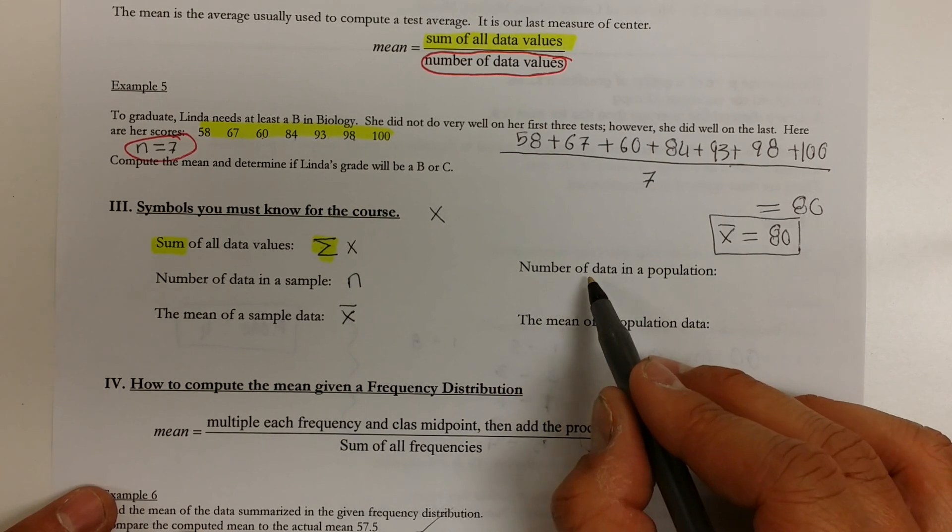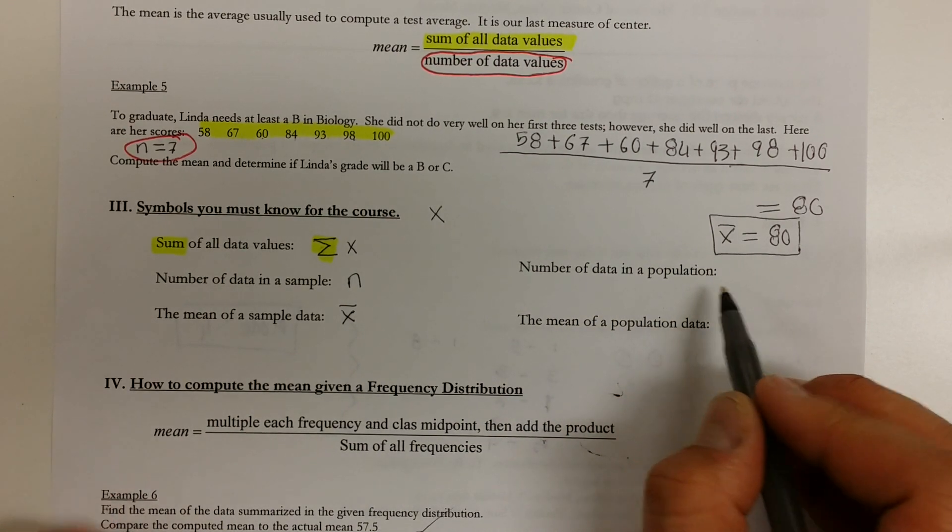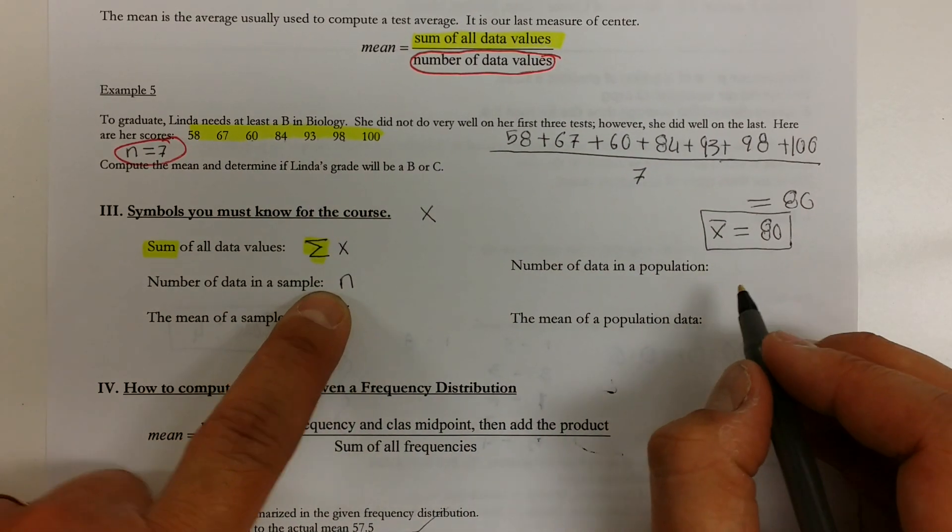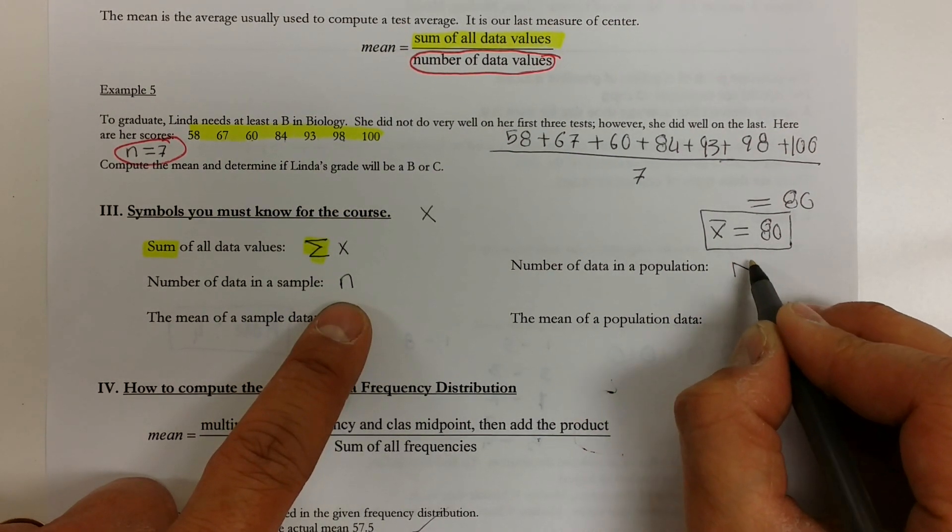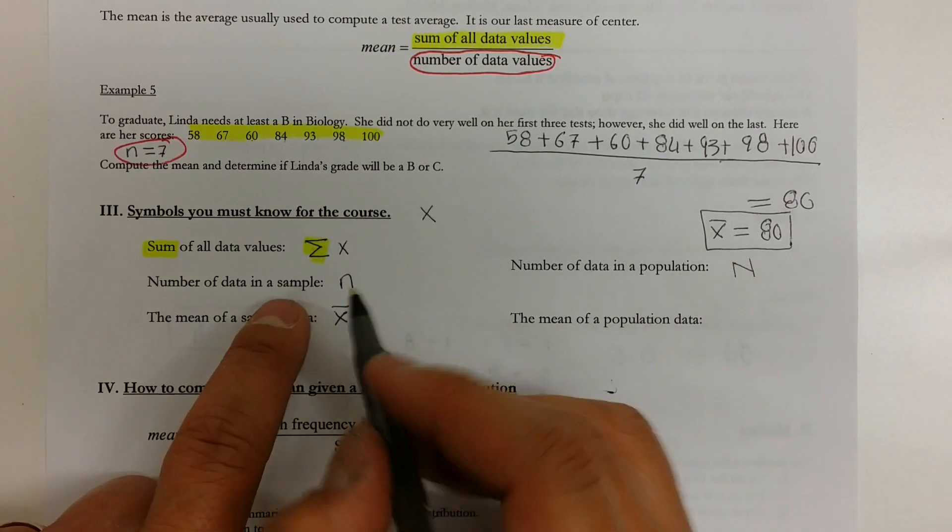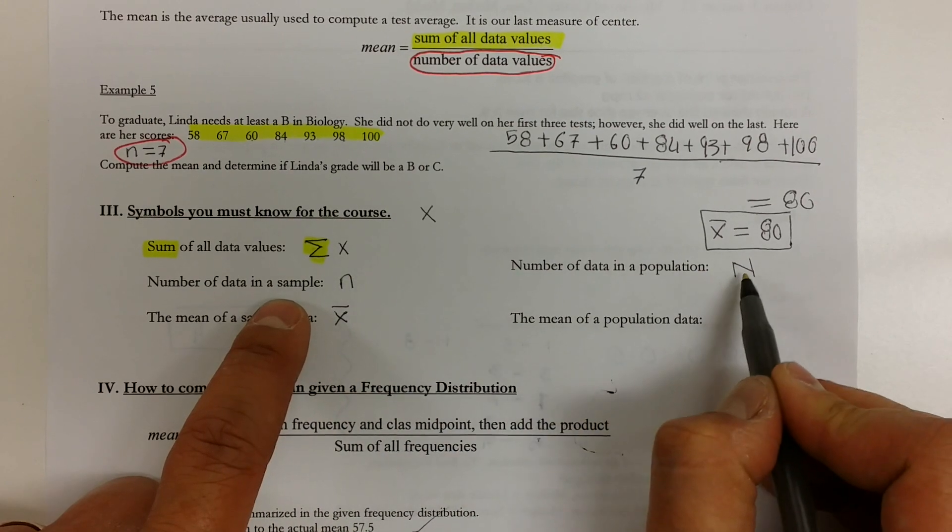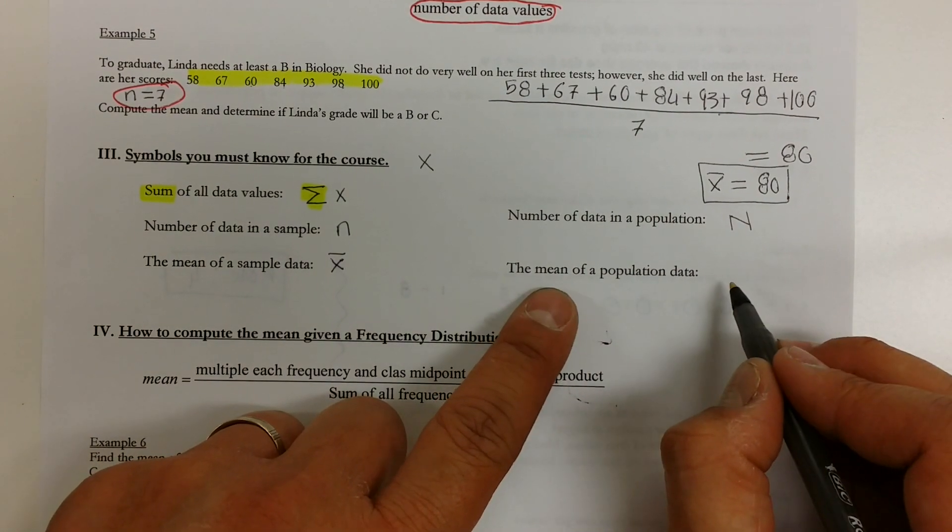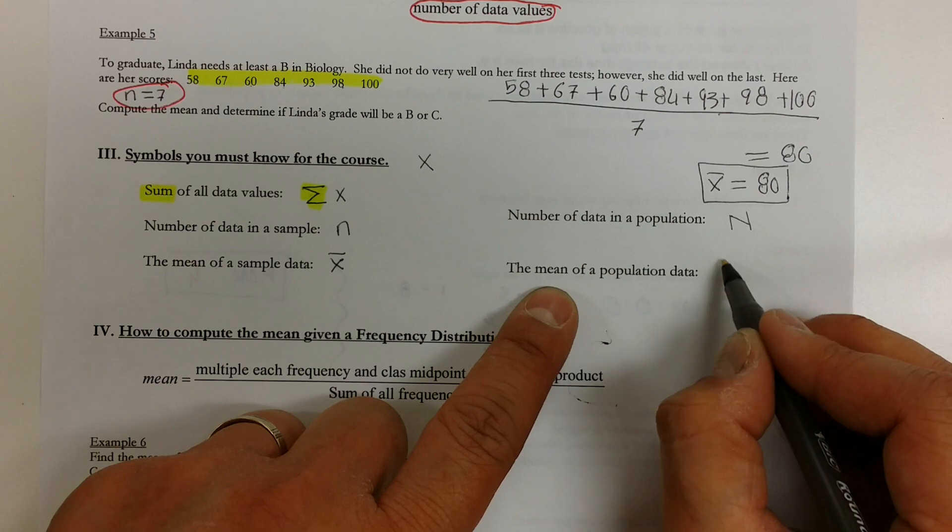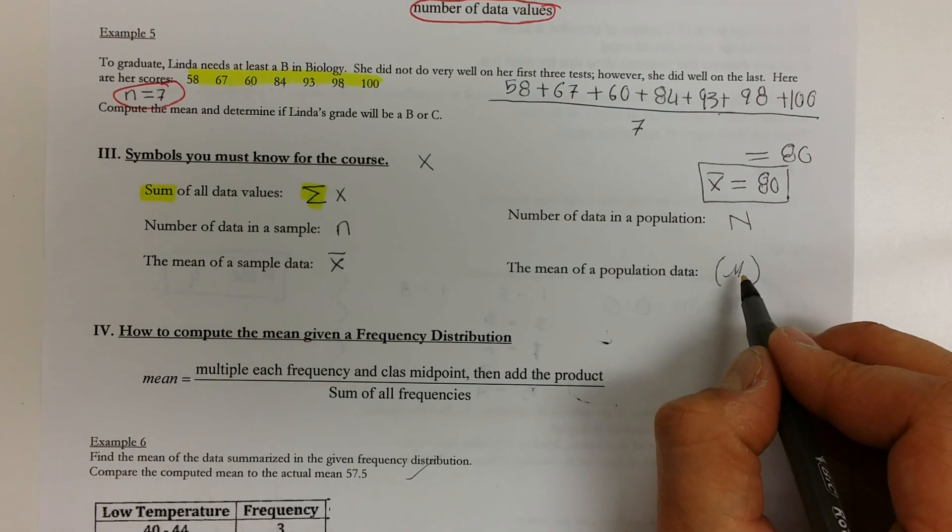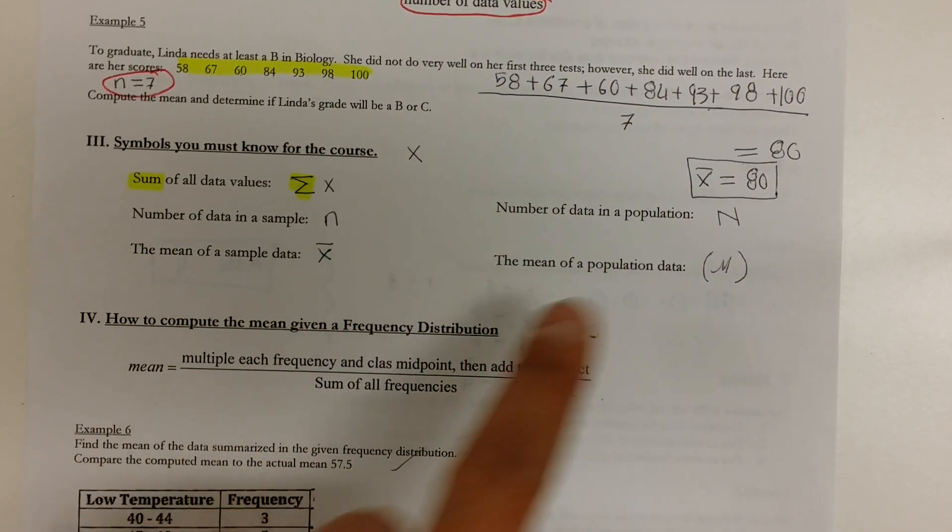Now, the number of data in a population, unlike the number of data in a sample, if you recall from what we did in class today, the letter to represent the number of data in the population is capitalized N. Think of this as the number of people in the class. Think of this as maybe picking 10 people out of 35 people in the class. Now, the average of your population is represented by the symbol, we call it mu. It looks like the letter M, but it's read as mu. Make sure you review that one twice. If you have any questions, make sure you let me know.